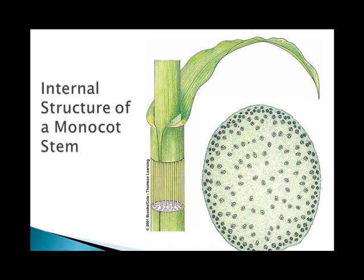In most monocots, the vascular bundles are scattered throughout the ground tissue. This scattering of the ground tissue allows it to bend and sway without breaking — it's not brittle.